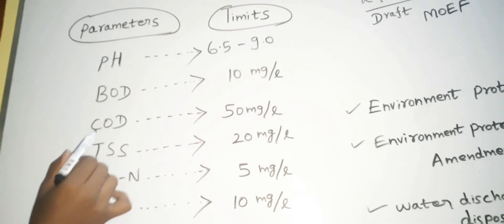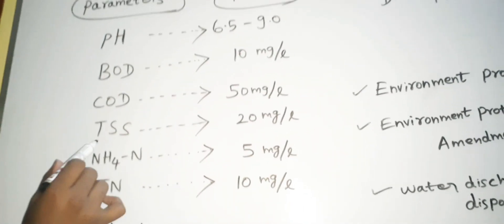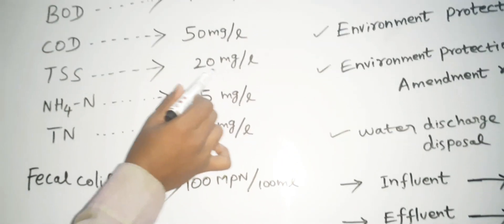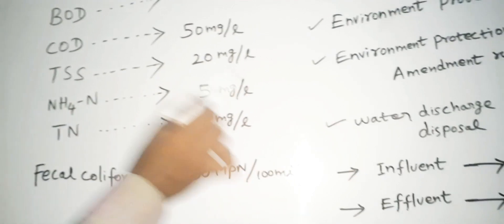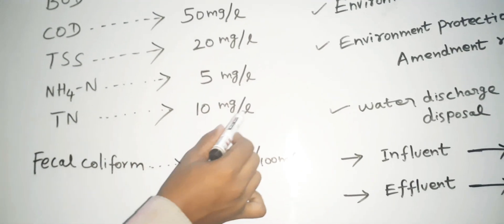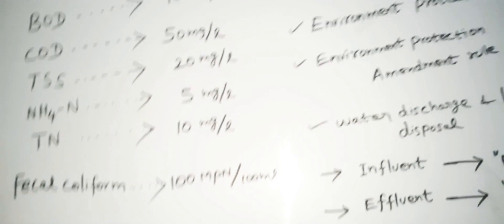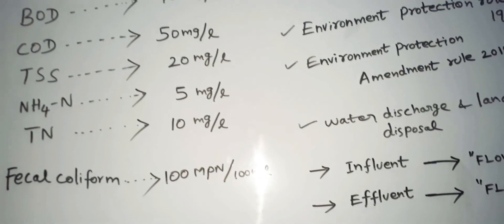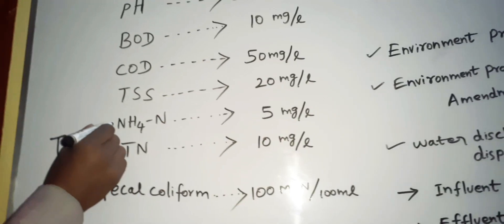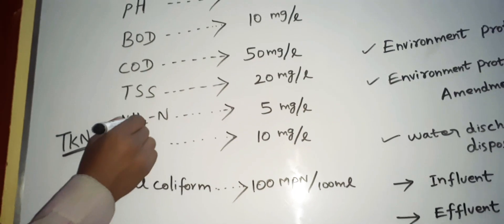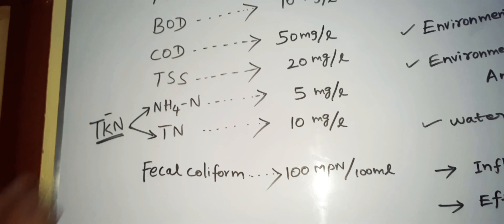BOD — Biochemical Oxygen Demand — is 10 mg per litre. COD — Chemical Oxygen Demand — is 50 mg per litre. TSS — Total Suspended Solids — is 20 mg per litre. Ammonical Nitrogen is 5 mg. Total Nitrogen is 10 mg. To determine TKN — Total Kjeldahl Nitrogen — this is a combination of Total Nitrogen and Total Ammonical Nitrogen.